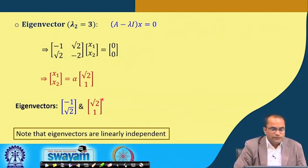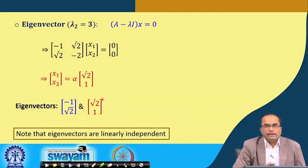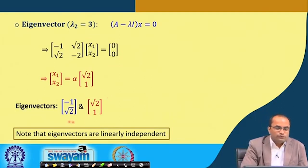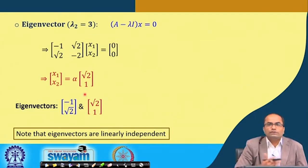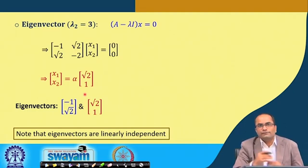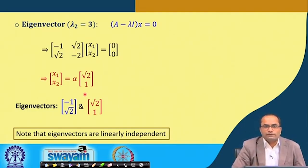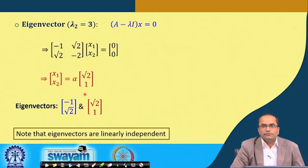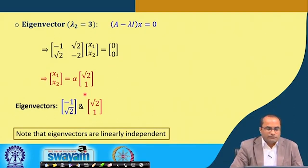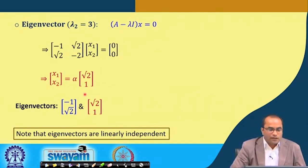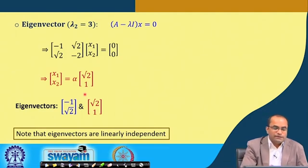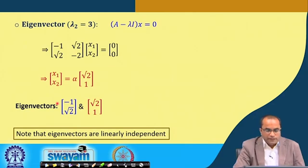We can note that these eigenvectors are linearly independent. As mentioned in the previous lecture — and we will also prove formally — corresponding to distinct eigenvalues, the set of eigenvectors is linearly independent. The eigenvectors corresponding to distinct eigenvalues are always linearly independent, and we can verify this here as well.